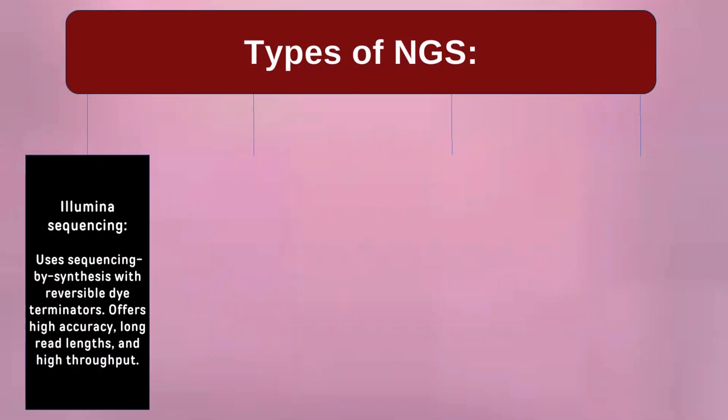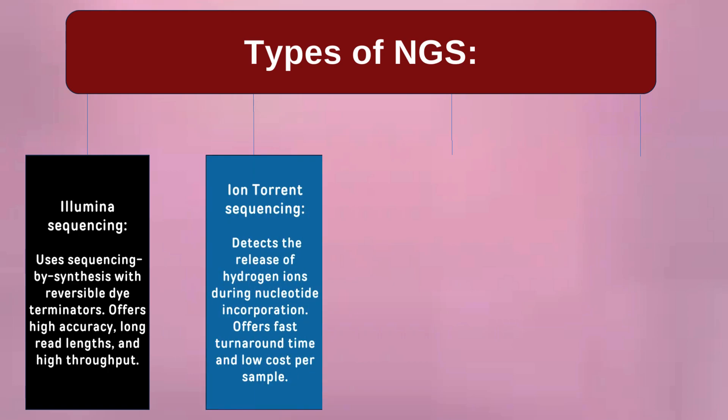Here we will outline the different types of NGS. Firstly, we have Illumina, which offers high accuracy, long reads, and high throughput — ideal for large-scale sequencing projects. Then we have Ion Torrent, which has fast turnaround with low cost per sample and is suitable for targeted sequencing and clinical applications.